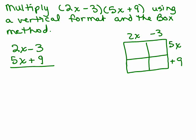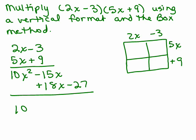We've gone over two methods: vertical format and the box method. Let's take two binomials — 2x minus 3 times 5x plus 9 — and multiply using both methods. Using the vertical method: 5x times 2x is 10x squared, 5x times negative 3 is negative 15x, then 9 times 2x is plus 18x, and 9 times negative 3 is negative 27. That gives us 10x squared plus 3x minus 27.